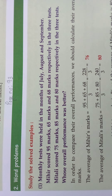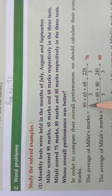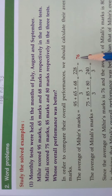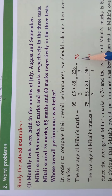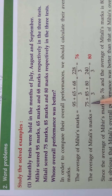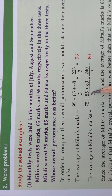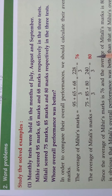Find the average. The average of Mihir's marks - add all the marks and divide. After finding the average, what is the average? 76. The average of Mittali's marks - add all the marks Mittali scored in 3 months and divide by 3. What's the average? 80.